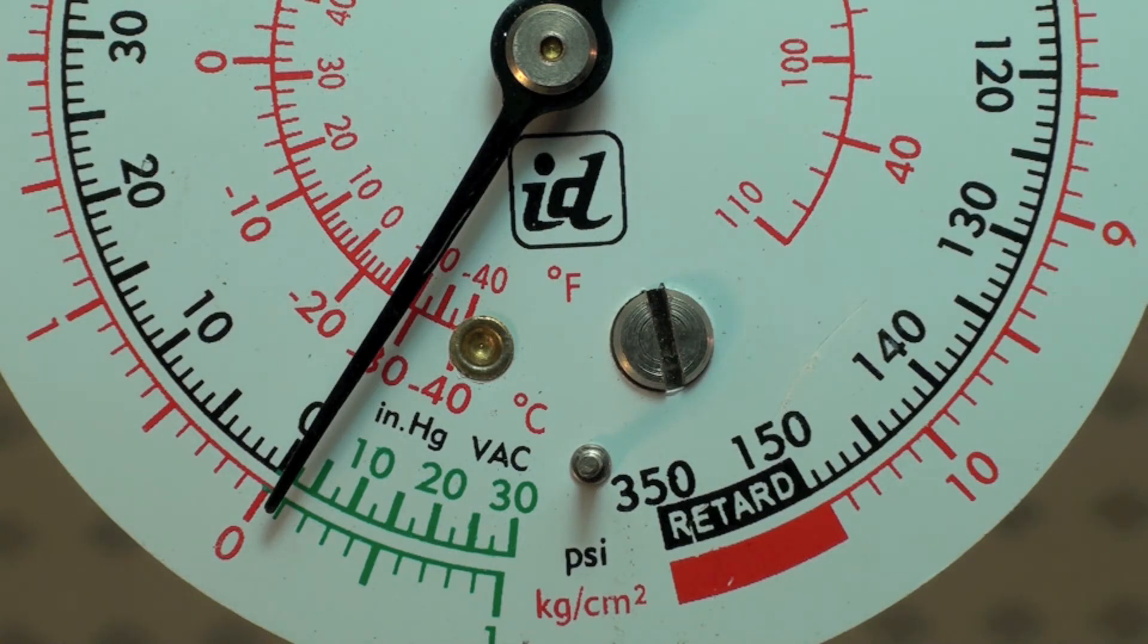The old gauges used to not protect against that and every time we hooked a heat pump up backwards we'd end up with a damaged gauge. These don't seem to damage as easily. They will still damage.